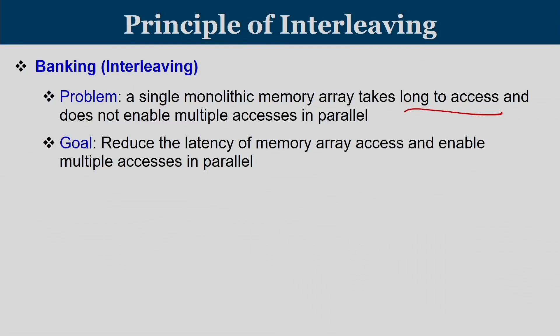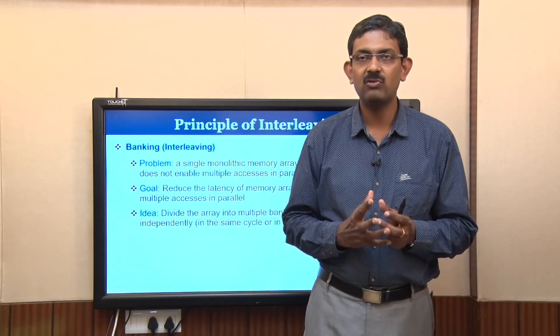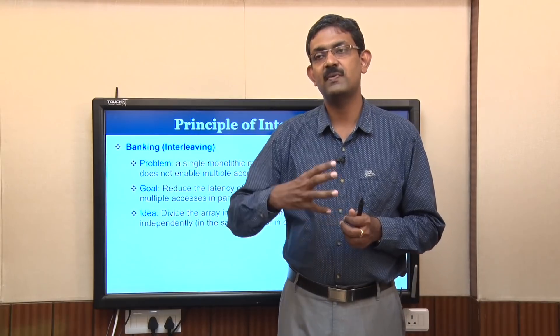The goal of banking or interleaving is to reduce the latency of memory array access and enable multiple accesses in parallel. This is done by dividing the array into multiple banks rather than keeping 4 GB as a single monolithic unit — for example, dividing into four 1 GB structures. These 1 GB structures can be accessed in parallel.